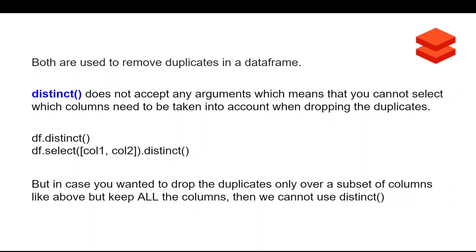Distinct takes everything in a data frame. The moment you say df.distinct it is going to take all the columns and based on that it is going to drop your duplicates. Now if you want to selectively drop duplicates using a few columns, you can say df.select(column1, column2), define the columns in a list, and then do distinct — but eventually you will not find the other columns. It will select only column1 and column2 and remove columns 3, 4, 5, 6, 7. That is how distinct actually works.